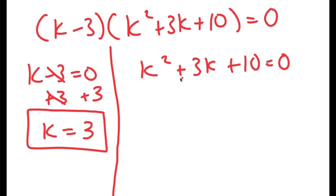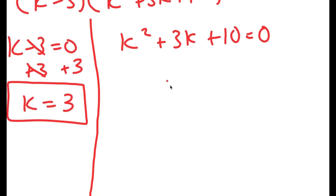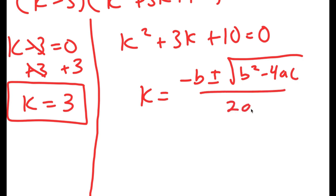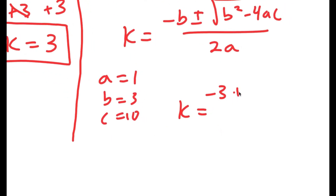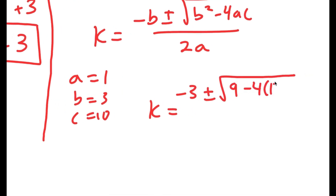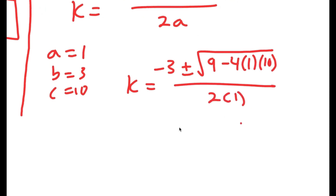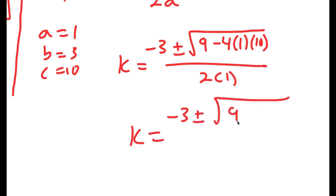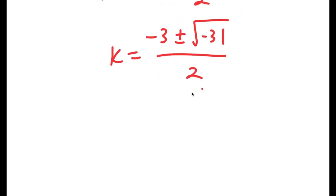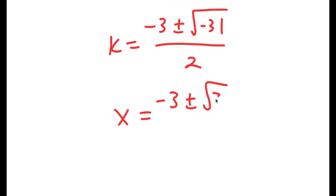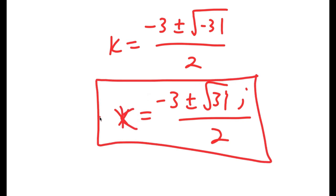So this is one solution of k. And for k squared plus 3k plus 10 equals 0, because it's a quadratic equation, I can use the quadratic formula, which is negative b plus or minus the square root of b squared minus 4ac all over 2a. In this case, a is 1, b is 3, and c is 10. So I get k equals negative 3 plus or minus the square root of 9 minus 4 times 1 times 10, all over 2 times 1. This is equal to negative 3 plus or minus the square root of 9 minus 40 over 2, which is equal to negative 3 plus or minus the square root of negative 31 over 2. I can rewrite this as negative 3 plus or minus the square root of 31 times i over 2, because i is equal to the square root of negative 1. So this gives two more solutions of k, and these are my three solutions.